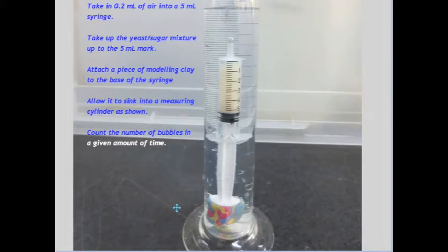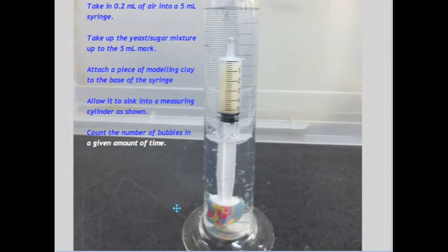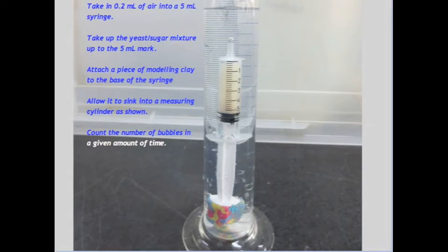He then pulled 0.2 milliliters of air into a 5 milliliter syringe. Following this, he took up the yeast-sugar mixture up to the 5 milliliter mark in the syringe. Then a mass of modeling clay was stuck onto the plunger part of the syringe and the whole device submerged in a measuring cylinder of water.